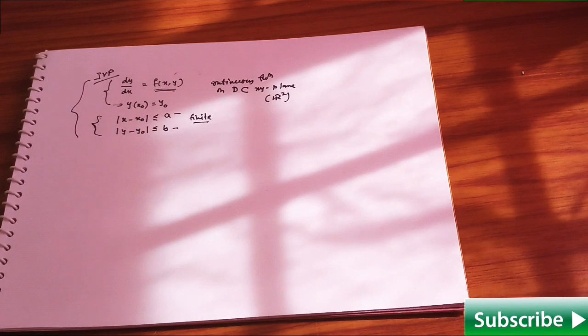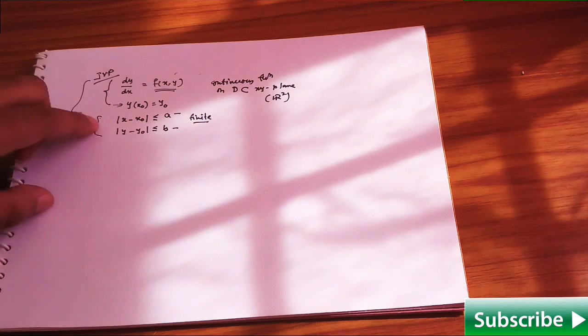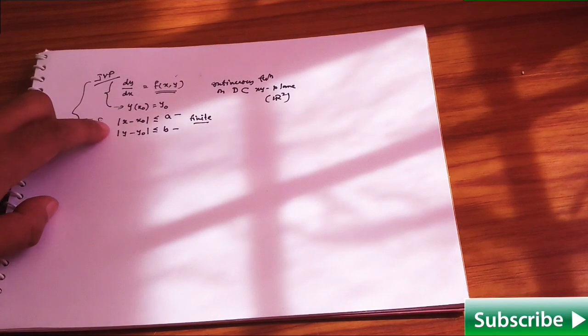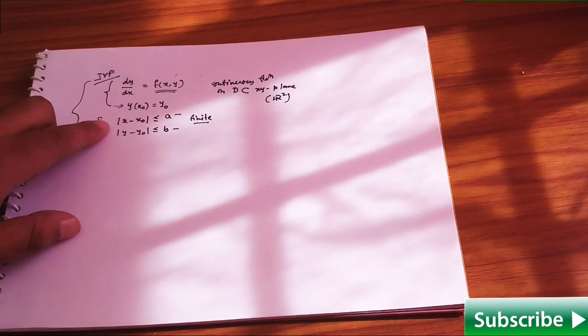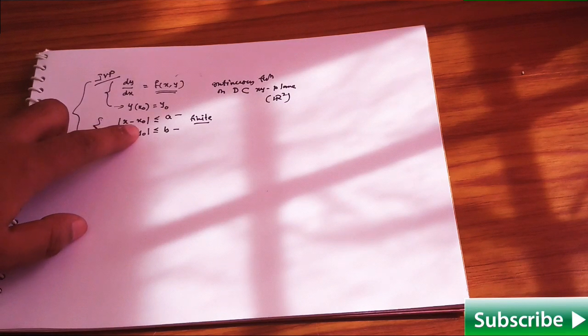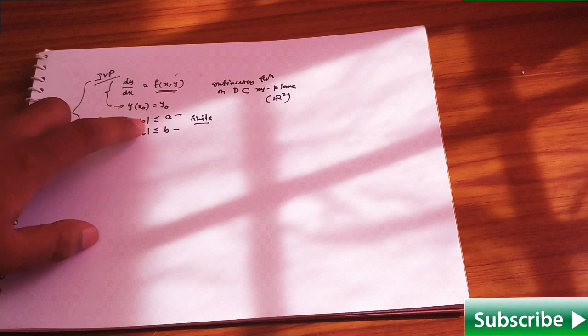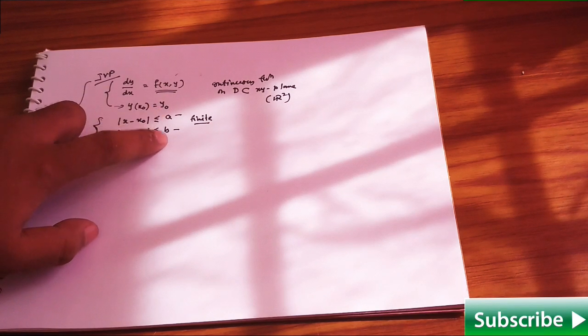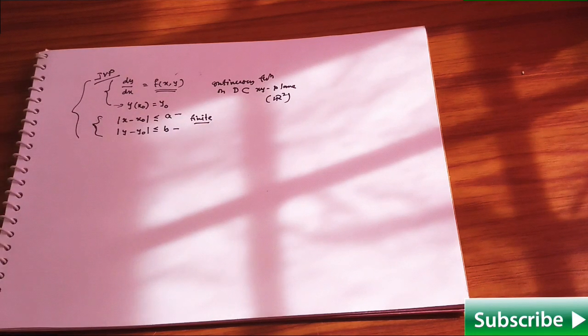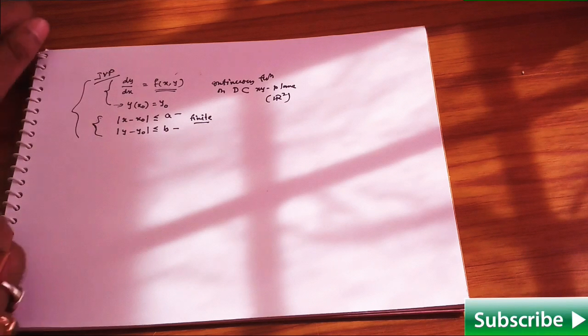Whenever we are going to find the interval of existence, you have this kind of thing: modulus of x minus x naught less than or equal to a, and y minus y naught less than or equal to b, where a and b are some finite constants. Then we have some hypotheses.